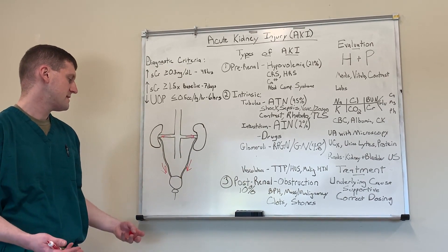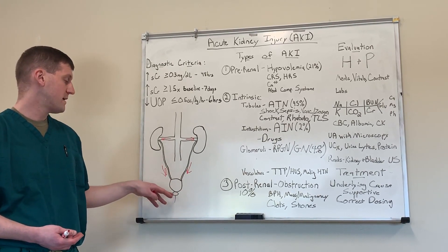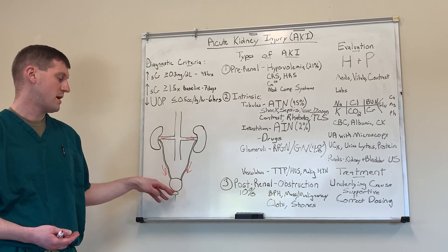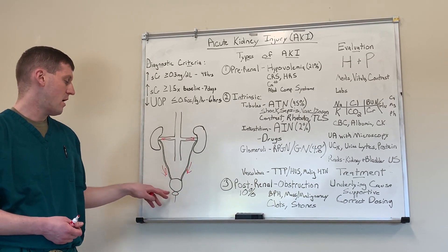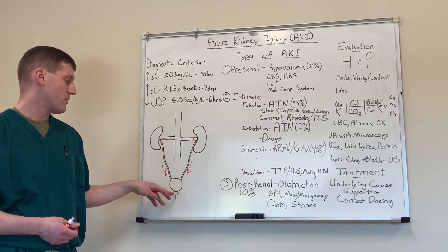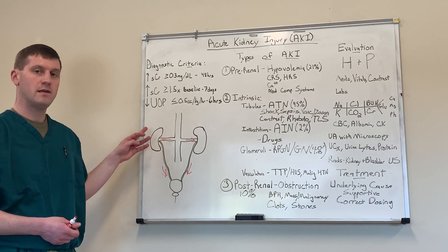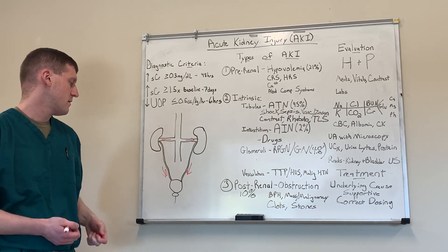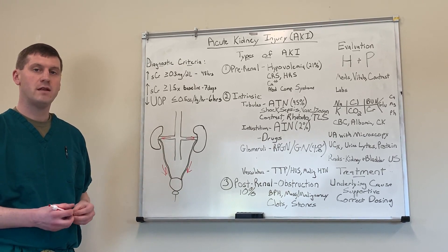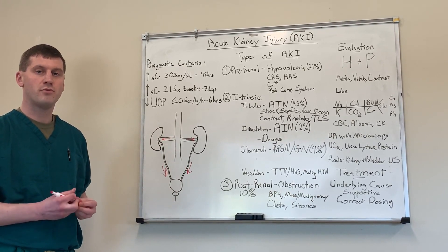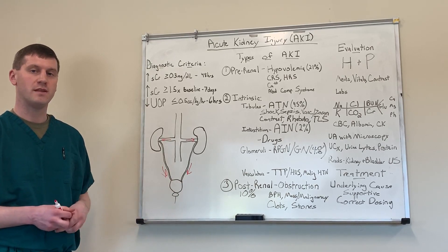What we can typically see in these cases would be bladder outlet obstruction, which we can see in elderly men with prostate issues — either BPH or prostate cancer — where enlargement squeezes on the urethra, the bladder fills up with urine, and ultimately it backtracks into the kidneys, causing some hydronephrosis. We can also see issues with clots made in the bladder. Anybody having gross hematuria is prone to forming clots, and that can cause the same thing — urine is not able to freely pass through.